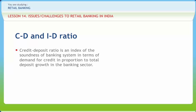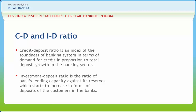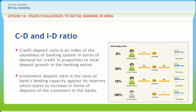The Credit Deposit (CD) ratio is an index of the soundness of the banking system in terms of demand for credit in proportion to total deposit growth in the banking sector. A declining CD ratio implies that the banking sector was flush with funds without any corresponding demand for credit, affecting the bank's profitability in the long run as they have to pay interest to depositors without corresponding income from credit outflow. The Incremental Investment Deposit (ID) ratio is the ratio of a bank's lending capacity against its reserves, which increase in the form of customer deposits. If banks don't lend these deposits, they will have to pay interest to customers without any income on that deposit.